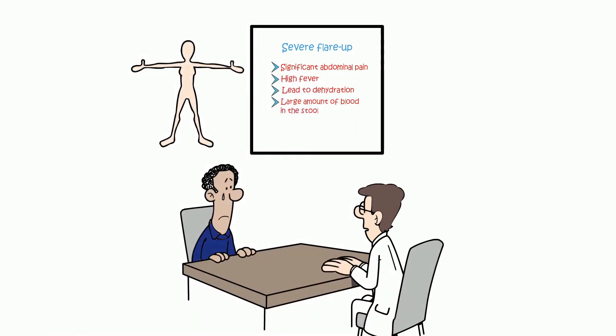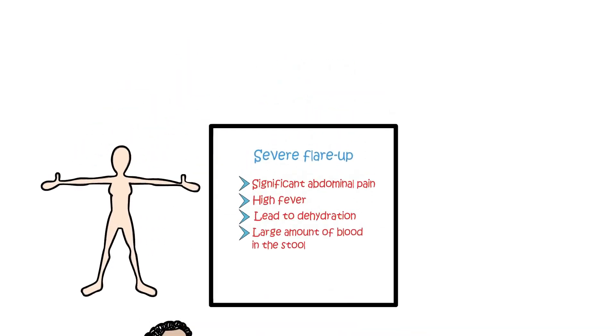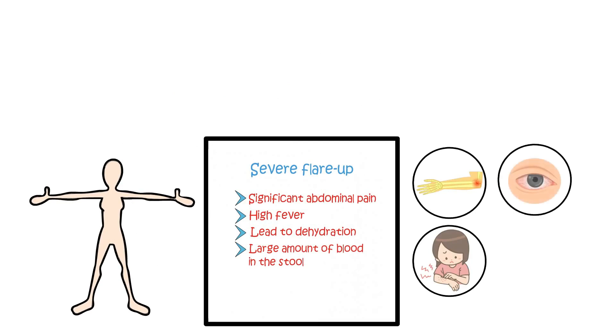Other parts of the body can also be affected in some people. For example, joint pains due to inflammatory arthritis, skin rashes, inflammation of the eye known as uveitis, and inflammation of the liver.